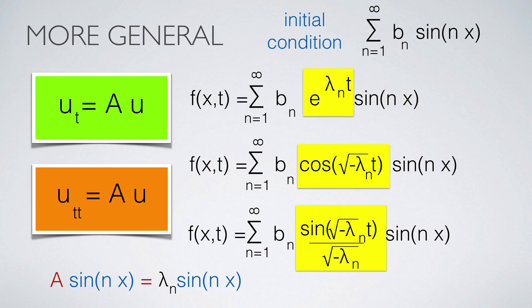Here is the situation when we have a more general operator on the right. Just get the eigenvalues of this operator and use the same formulas as before. In the wave case, we have to take the square root of minus lambda. In the case when lambda was minus n squared, this is equal to n.